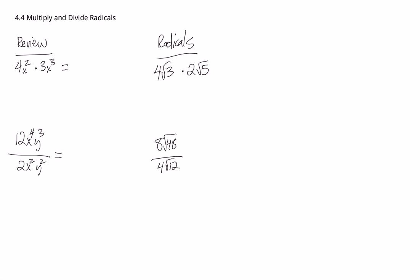Today we're going to look at multiplying and dividing radical expressions. We're going to be dealing with radicals and square roots, except we're going to be multiplying and dividing them. We just need to go through a few of the rules on how to do that. These are typically pretty easy because it works very similar to when you multiplied and divided exponents. So let's go through a couple of review questions first.